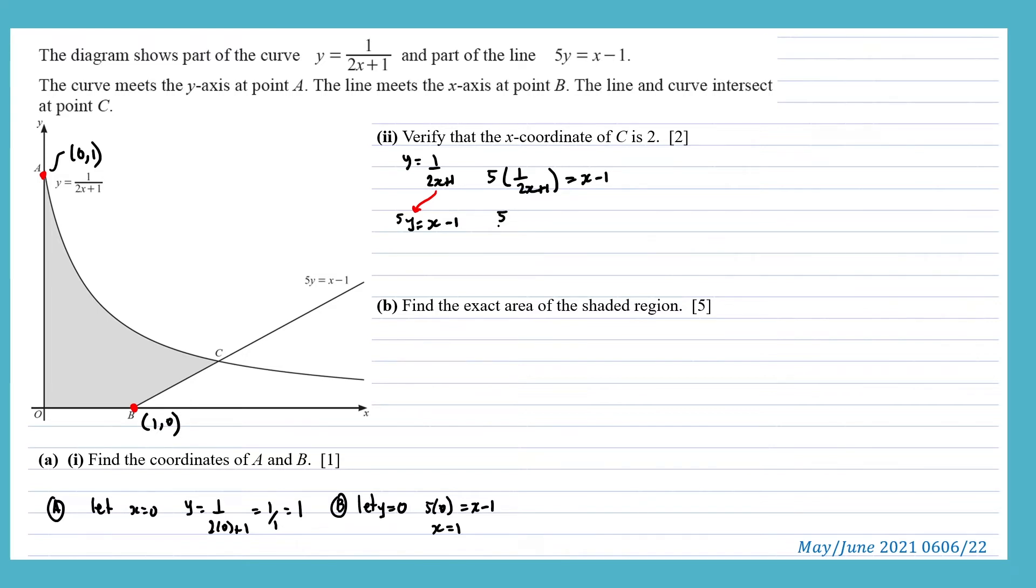So we'll have 5 times 1 over 2x plus 1 equals x minus 1. So that will give us 5 over 2x plus 1 equals x minus 1. And we can cross multiply now. We'll have 5 equals x minus 1 times 2x plus 1. And when we expand and simplify, we'll get 2x squared minus x minus 6 equals 0. Factorizing will give 2x plus 3, x minus 2 equals 0. So x will equal negative 3 over 2 and 2.